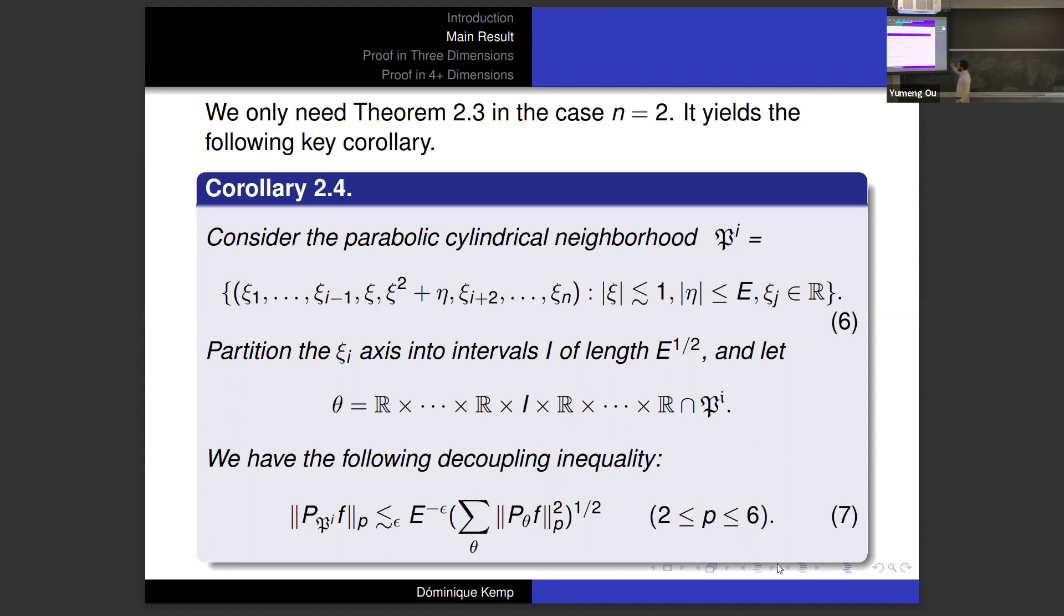For our work here, we just need that same theorem only in the two-dimensional setting. We just need the statement of decoupling for the paraboloid, and then by the usual extension to cylinders, we have a decoupling tool that is fully available for use for our purposes. You take some parabola in the ξ_i ξ_{i+1} coordinate plane, and then you just extend it cylindrically for all other components. The width of the same parabola in the ξ_i ξ_{i+1} coordinate plane, we're allowing that to be at most E, our neighborhood width. When we partition the ξ_i axis into intervals I of length E^{1/2}, this is reflected in this dissection of the parabolic cylinder. We have this decoupling inequality. This comes by way of the Bourgain-Demeter theorem combined with Minkowski's inequality and Fubini.